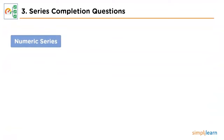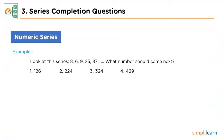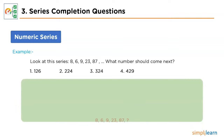Let's look into the sample problem of Series Completion. The first problem is based on numerical sequencing, and the sequence provided is 8, 6, 9, 23, and 87. Let's take these numbers on our workspace to formulate an answer. If you observe these terms, you won't find any direct pattern, so let's break these numbers down.